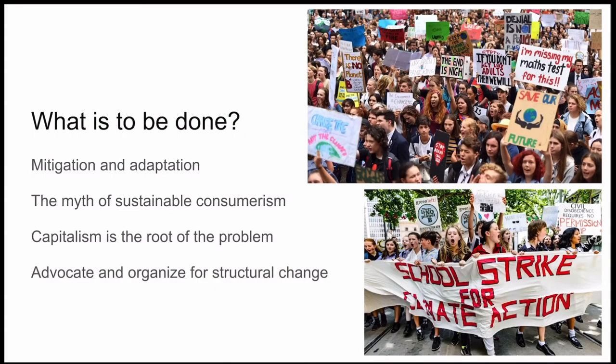It's obvious that something has to be done about climate change. We need to consider two categories of solutions: mitigation and adaptation. Mitigation means to decrease — stemming the future effects of climate change will require us to mitigate the amount of greenhouse gases in the atmosphere. Adaptation means to change — we'll need to adapt our society to the effects that we're already feeling.